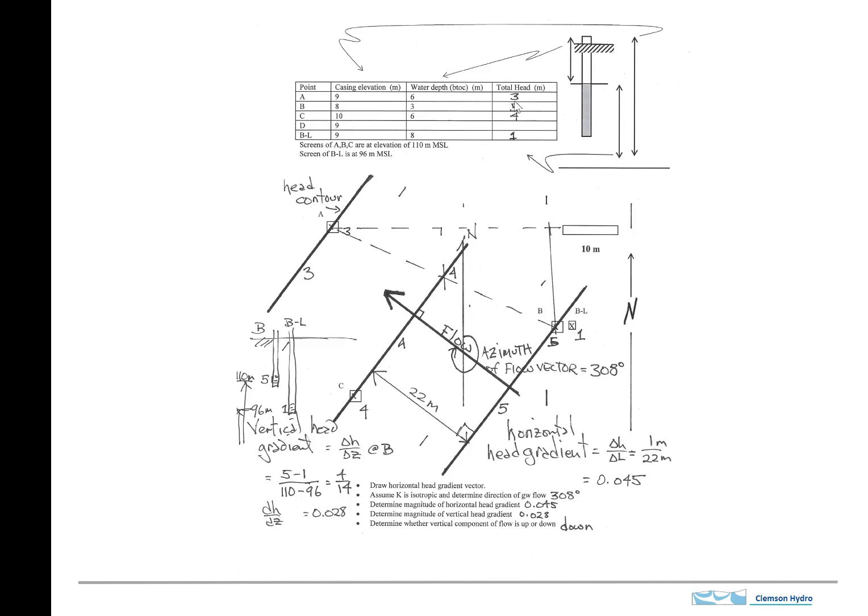So the total head here is 3 because we have a casing elevation of 9. And we subtract off the depth to the water of 3.